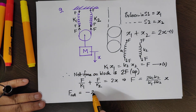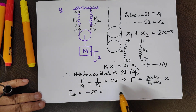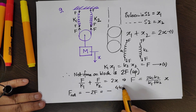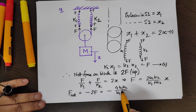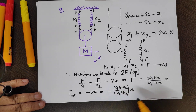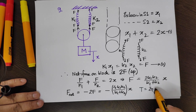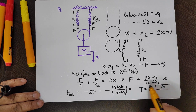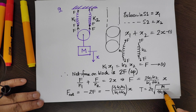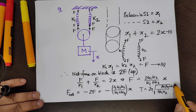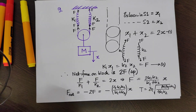The net force on the block is 2f upward, so F_net = -2f = -4k1k2/(k1 + k2) · x. This is the effective spring constant of the SHM, and the time period is 2π√(m(k1 + k2)/(4k1k2)).